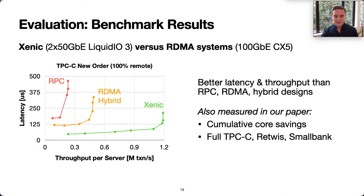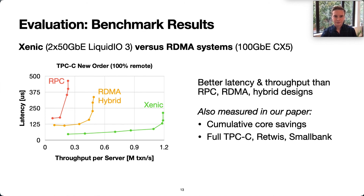We evaluate ZNIC using the TPCC, Retwis, and SmallBank benchmarks and make comparisons to 100 gigabit RDMA systems. To show one example, ZNIC's performance with the TPCC new order workload outperforms both RDMA and pure RPC throughput by more than two times, with a 59% latency reduction. We also measure CPU utilization for both host and NIC cores and compare that to the RDMA designs. We find that ZNIC also reduces overall core utilization while delivering this performance improvement.